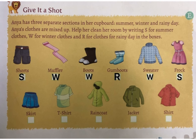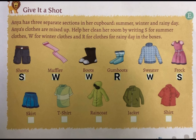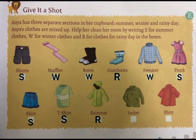Next comes skirt — we wear skirts in the summer season, so write S in the box. Then comes t-shirt — we wear cotton t-shirts in the summer season, so write S in the box. Next is raincoat — we wear raincoat on a rainy day, so write R. Then comes jacket — we wear jacket in the winter season, write W. The last one is shirt — we wear shirts in the summer season, write S in the box.